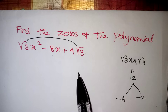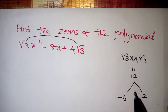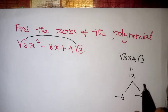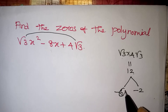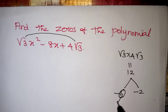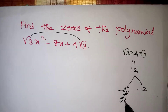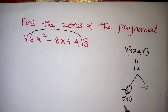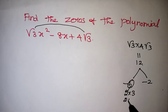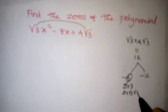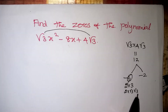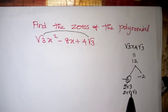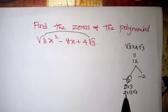Since the equation involves root 3, we need to figure out how to introduce root 3 into the factorization. The number 6 can be written as 2 × root 3 × root 3, because root 3 × root 3 = 3, and 3 × 2 = 6. So 6 = 2·root 3·root 3.